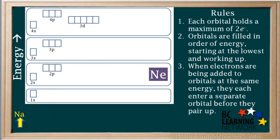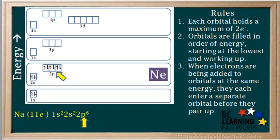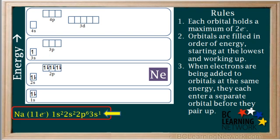Now we'll write the configuration for element number 11, sodium. It has 11 electrons. The first two enter the 1s orbital, the next two the 2s, and the next six the three 2p orbitals. That accounts for 10 electrons. Sodium's 11th electron goes into the next lowest energy level, the 3s. So sodium's configuration is 1s², 2s², 2p⁶, 3s¹.